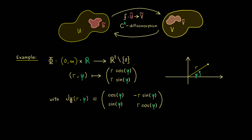We can easily calculate the determinant. We immediately get that it is r times cosine squared plus sine squared. By the Pythagorean theorem this is always equal to 1, so the Jacobian determinant of Phi equals r. It is never equal to 0 — in fact it is always positive, simply because the radius r is chosen to be a positive number.